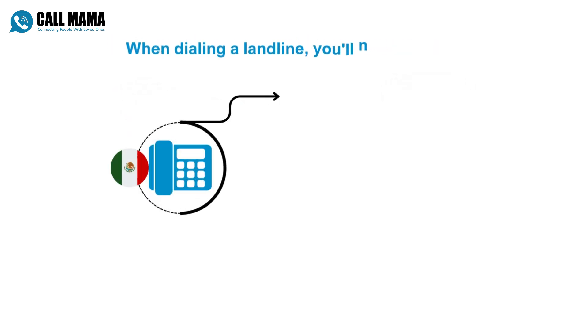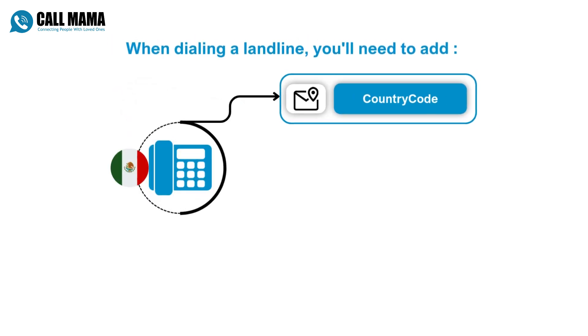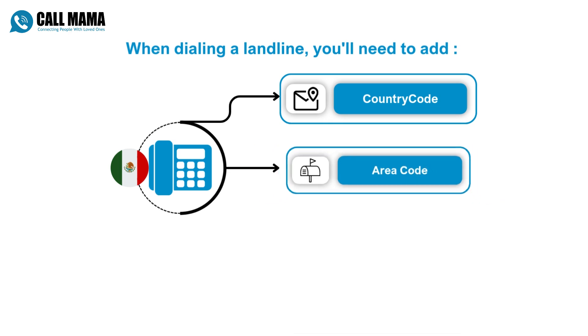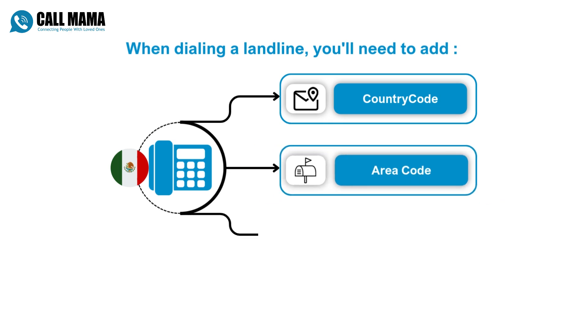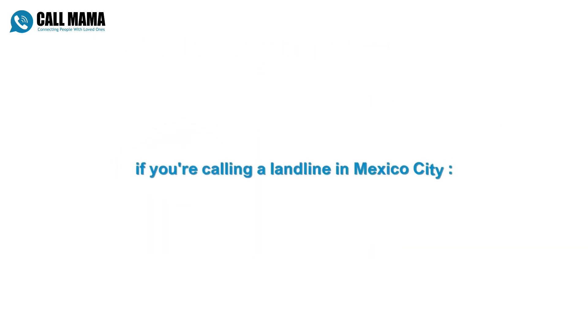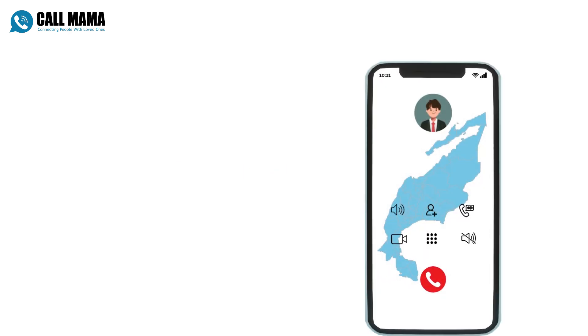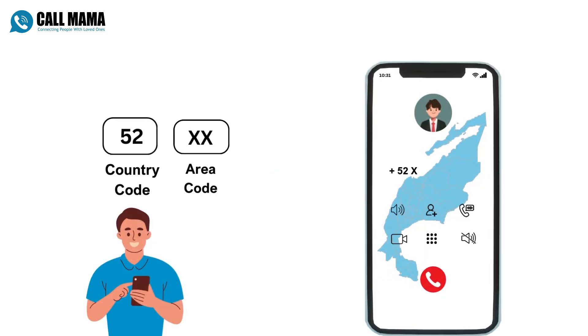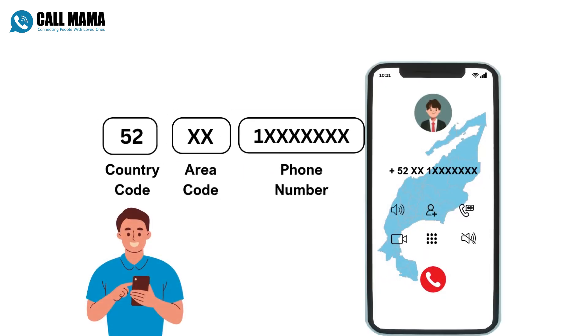When dialing a landline, you'll need to add the country code and the area code to the phone number. For example, if you're calling a landline in Mexico City, you would dial 52 plus the area code plus the 8-digit phone number.